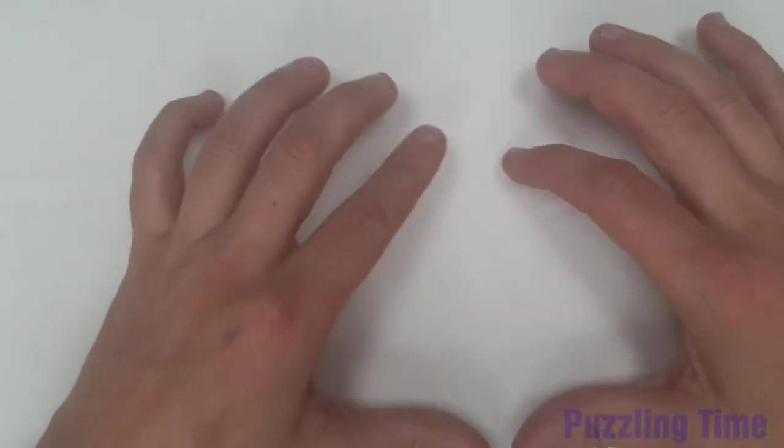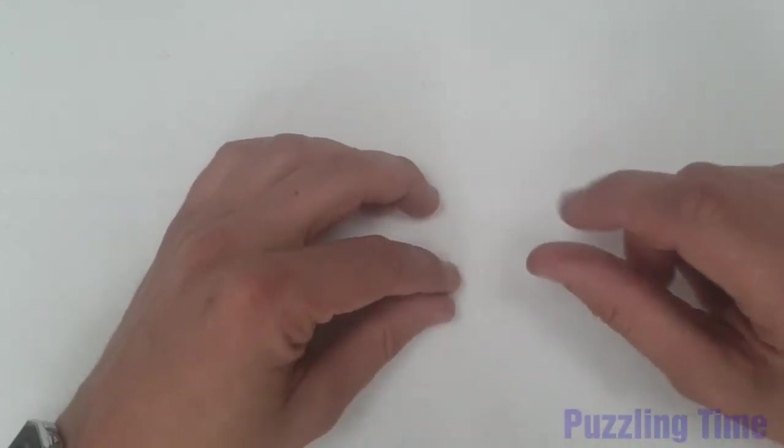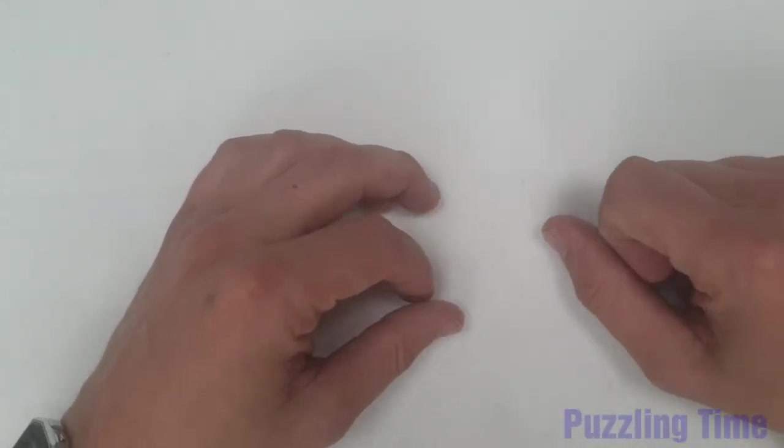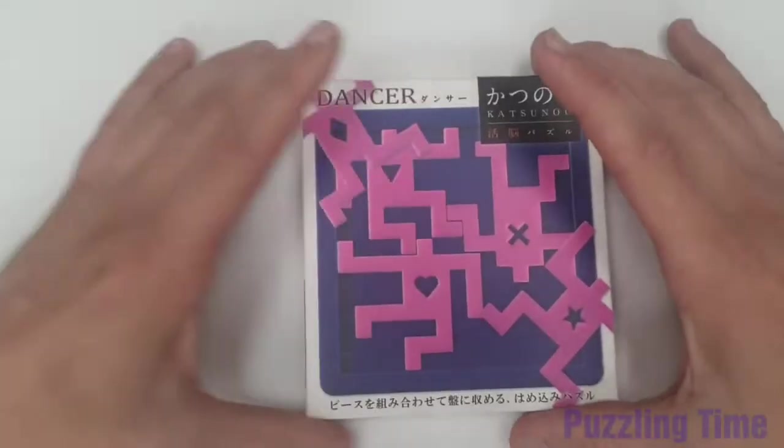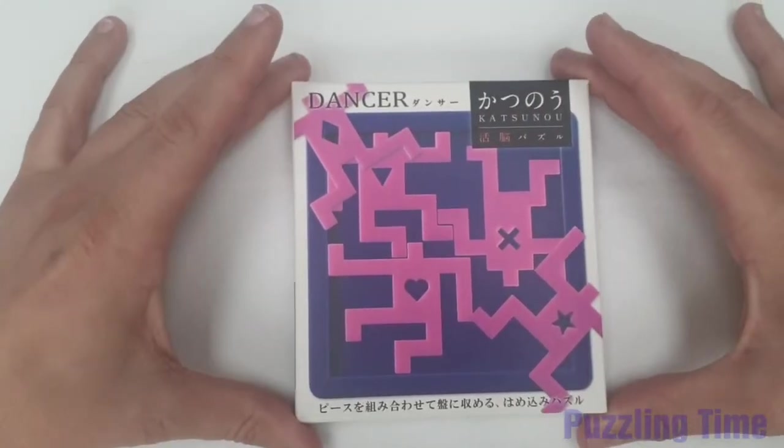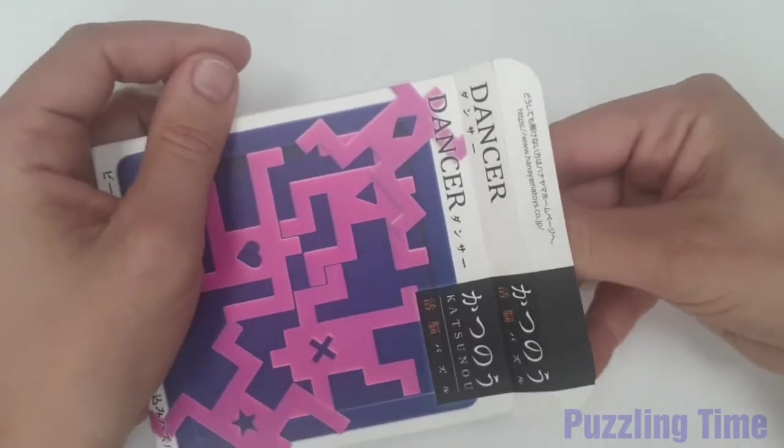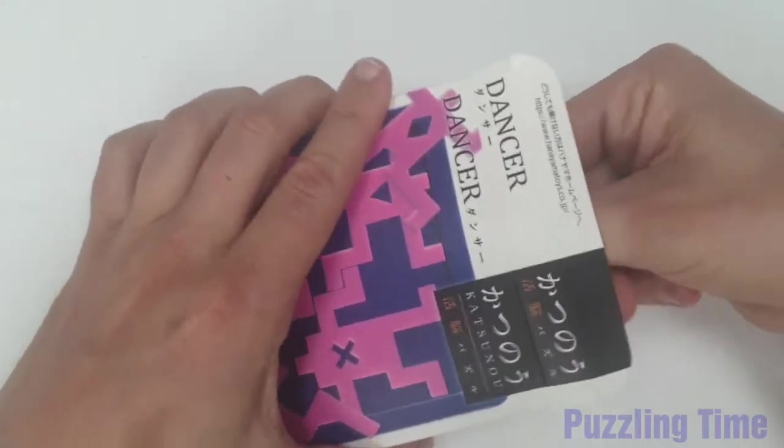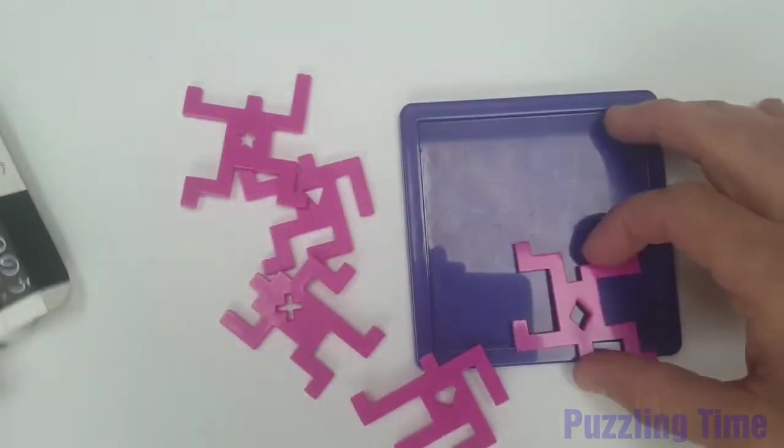Now from the same range is this Hanayama's Dancer. The idea of Hanayama's Dancer is to take the packing tray, we have five dancers, and it's not to put all five dancers into the tray but to remove one of the dancers and then put four dancers into the tray.